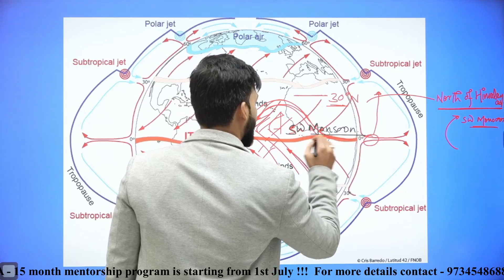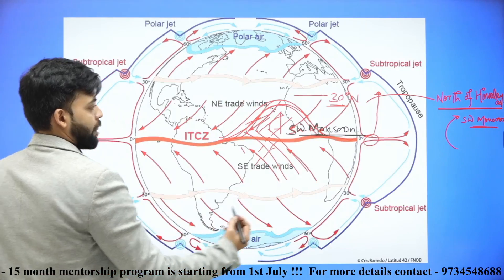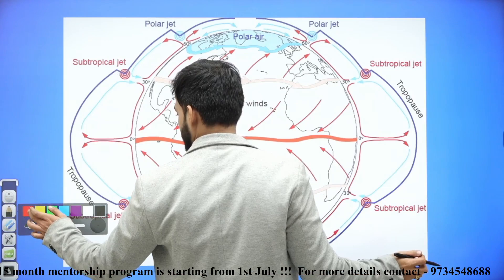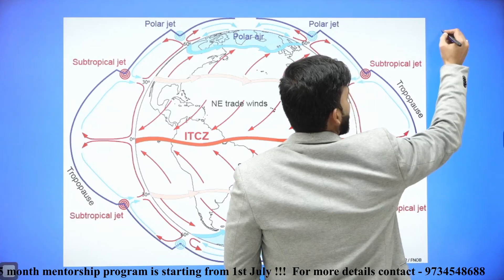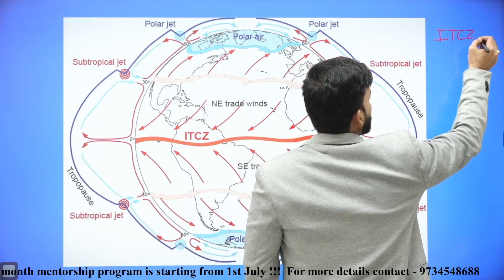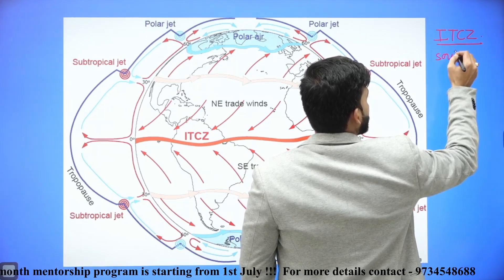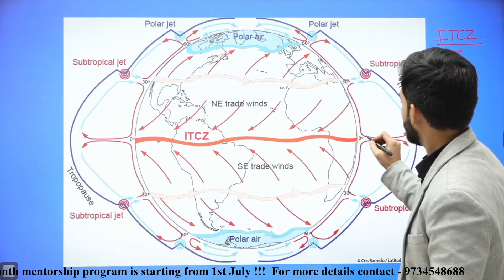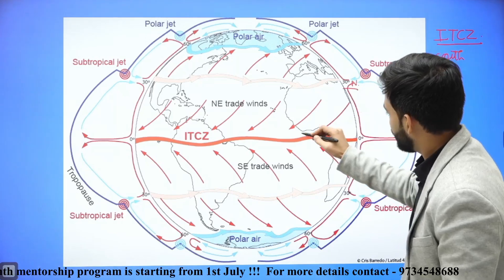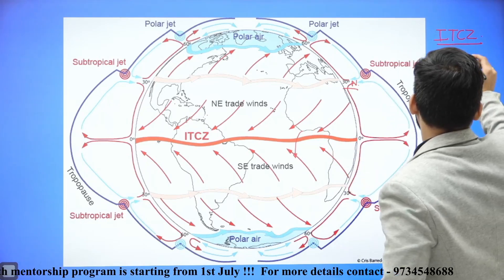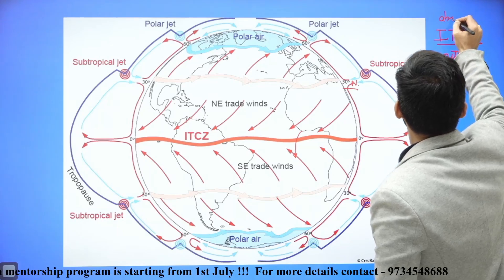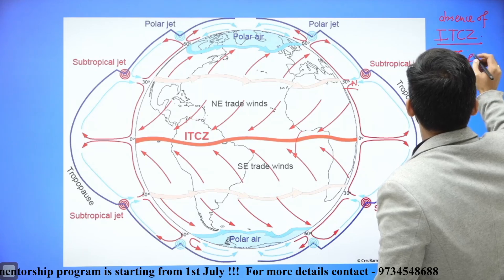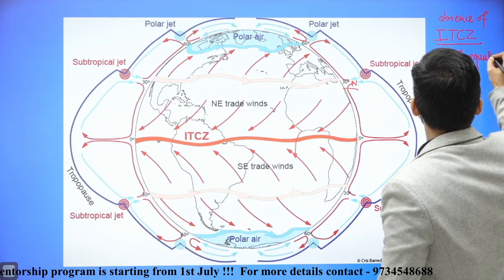Now, as far as cyclones are concerned in these latitudes, there is an absence of ITCZ south of the equator. Usually the ITCZ remains between the equator and the Tropic of Cancer, that is from 0 degrees to 30 degrees north. It does not move beyond 0 degrees under usual circumstances, so ITCZ is absent south of the equator.